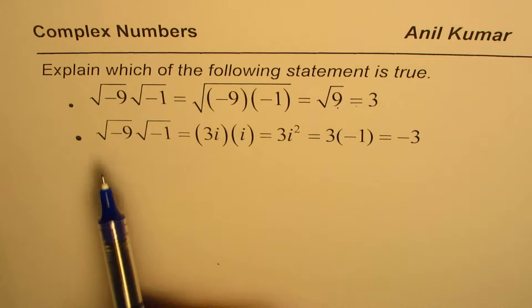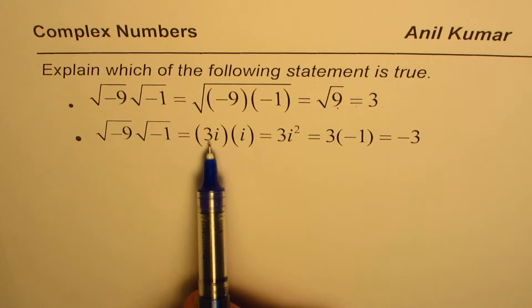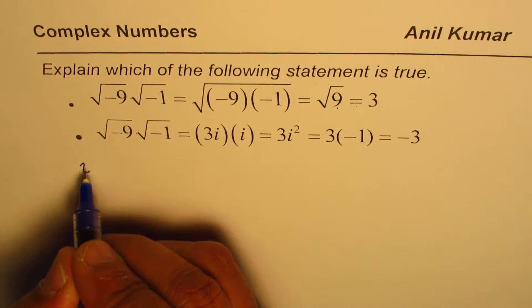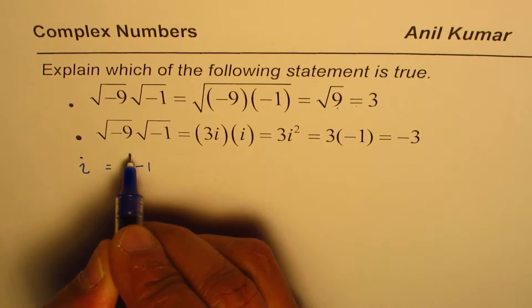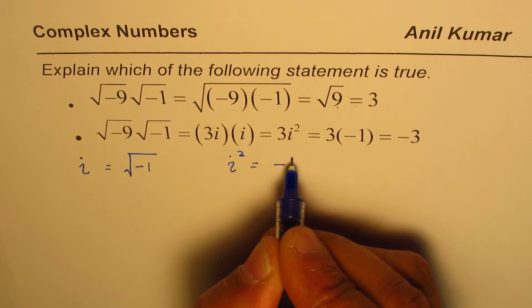The other one here is square root of minus 9 times square root of minus 1 equals 3i. I hope you remember what i is. i is equal to square root of minus 1, and i square equals minus 1.